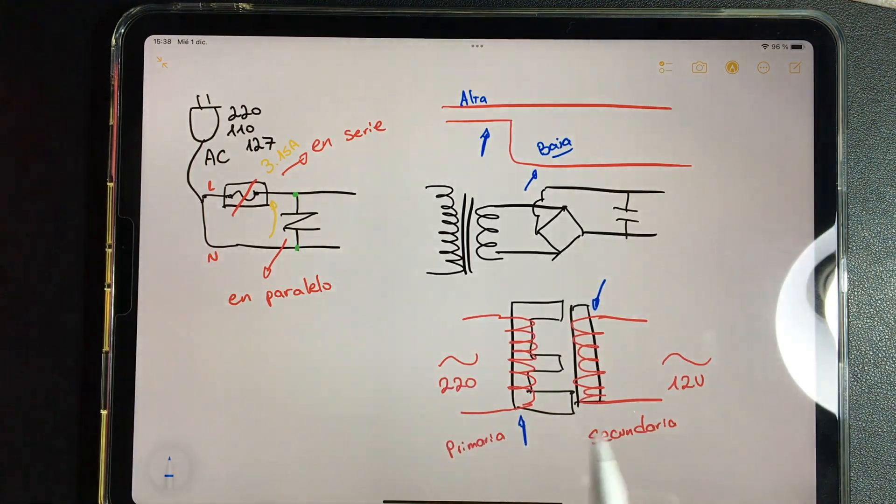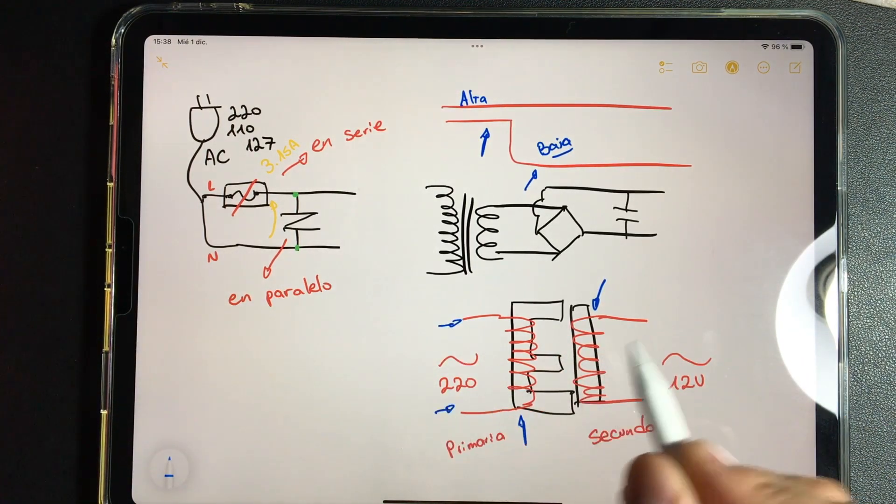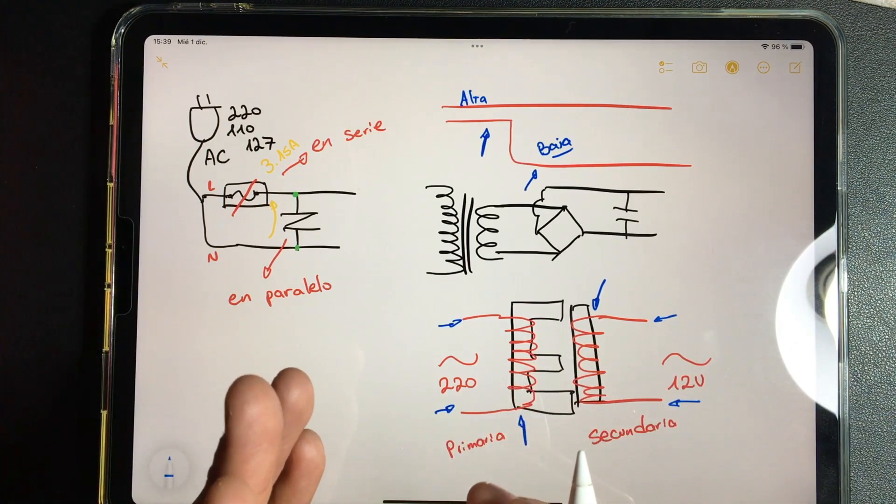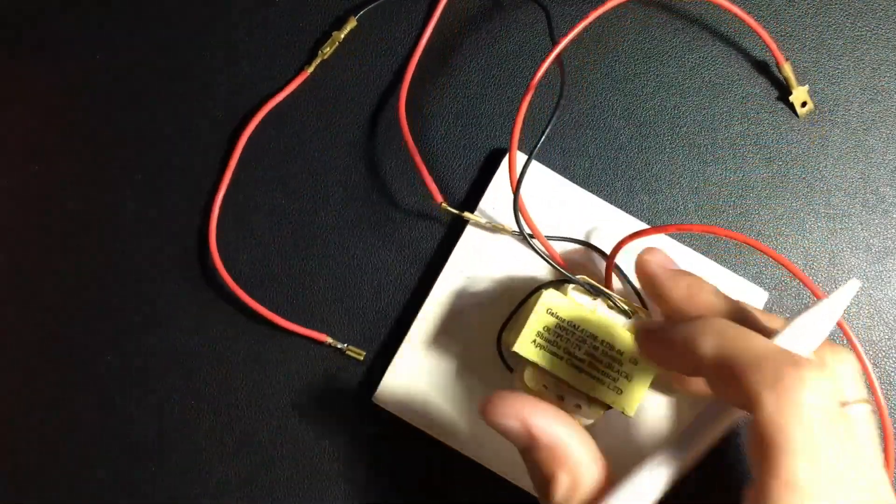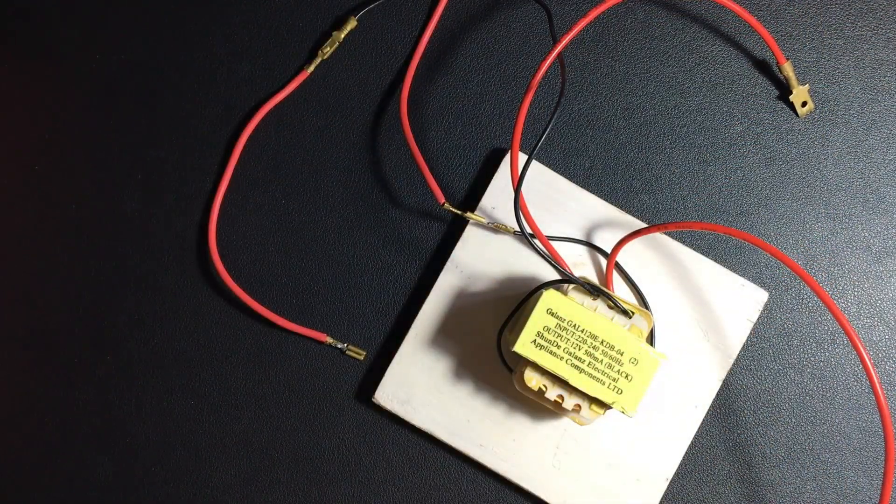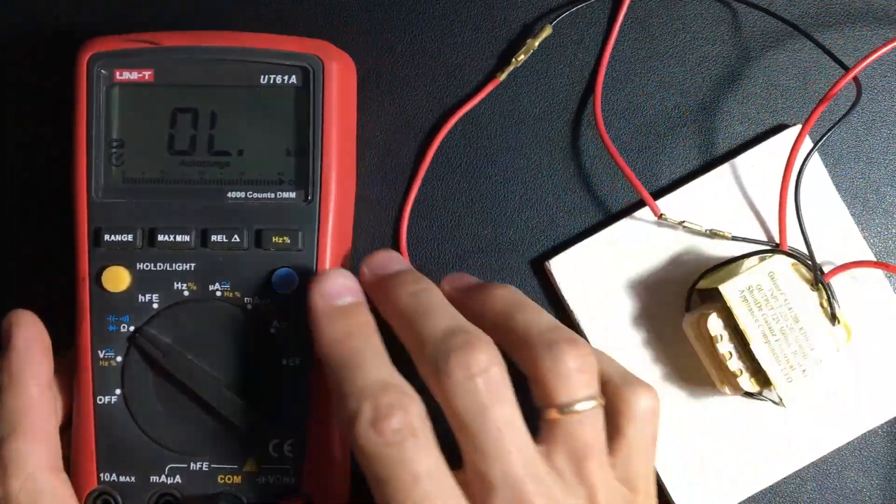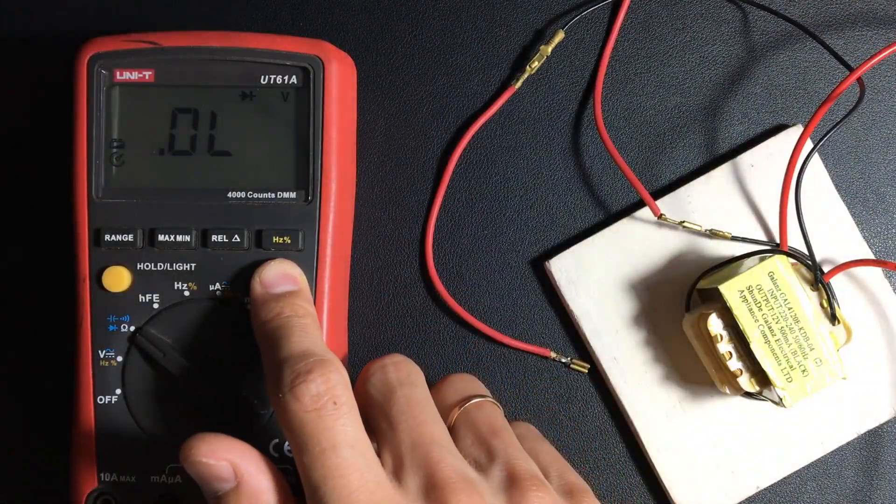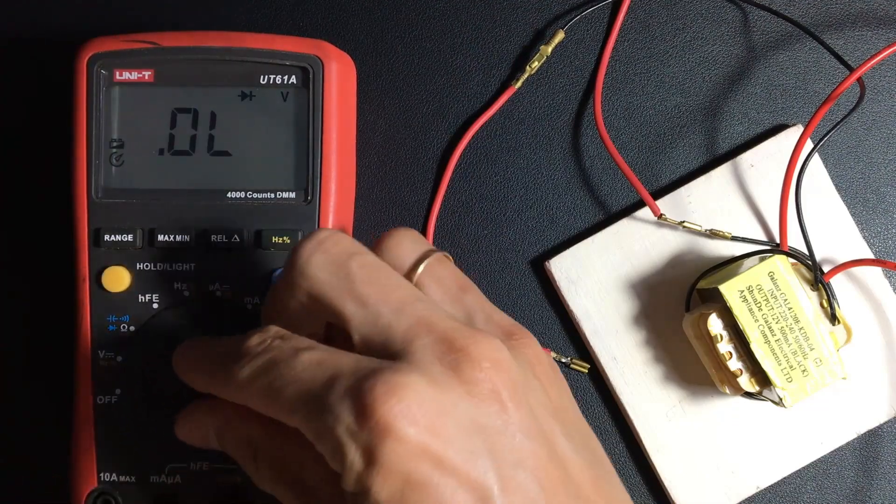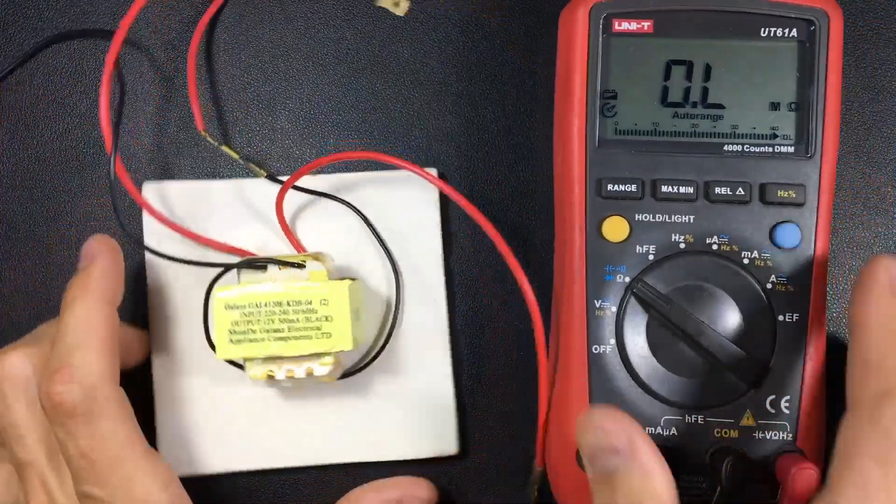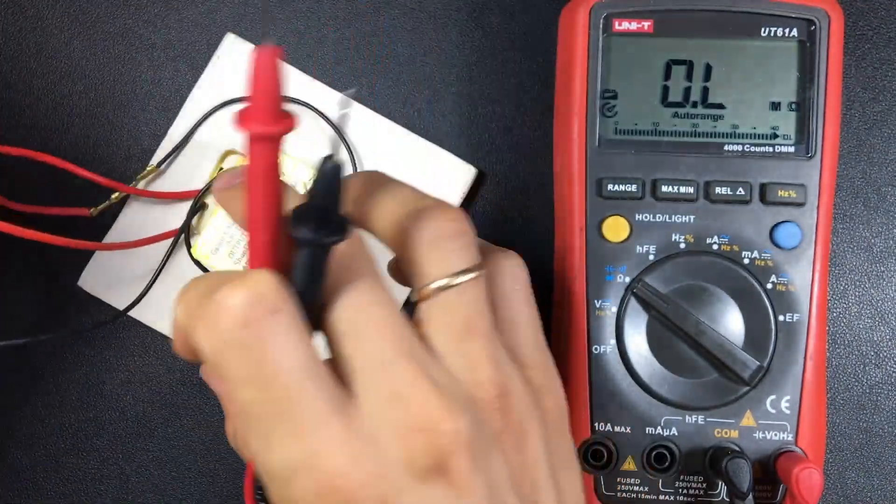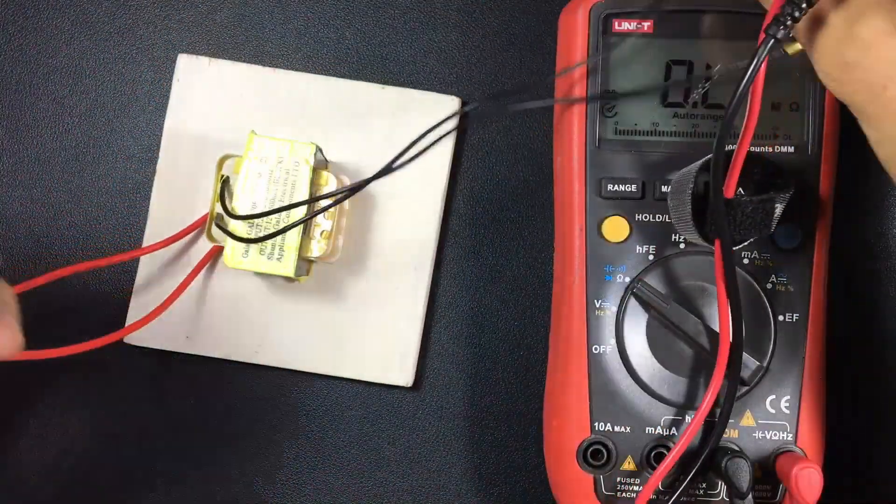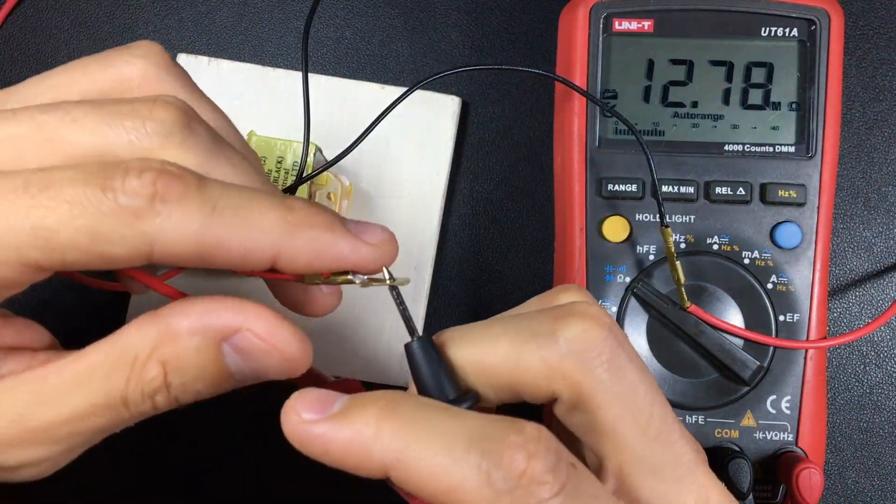This is important to understand because now I am going to teach you how to check if it is in good or bad condition, but without voltage. We are going to do it a safer way. We are going to corroborate it with resistance. Let's grab our transformer and set the multimeter to resistance. What we are going to do now is control the primary side. The primary side is generally the thickest wires and the secondary side is the thinnest wires. We will control the primary side and look what we find.